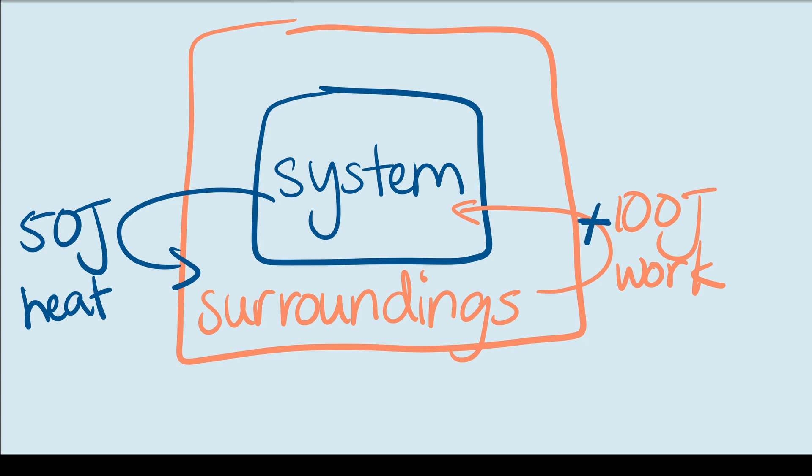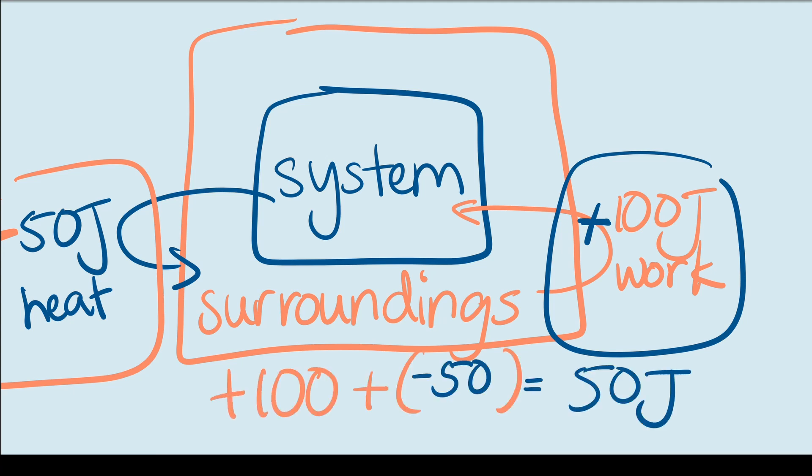Now the system also lost heat to the surroundings. So we have to take that into account as well. If we add up the numbers, positive 100 joules of work on this side and negative 50 joules of heat because it lost energy and that's on this side. If we add those up, we get a total net change of 50 joules which went into the system because it's positive. So what does that mean? The internal energy of the system went up by 50 joules and that makes sense too because more energy entered the system than the amount that left.